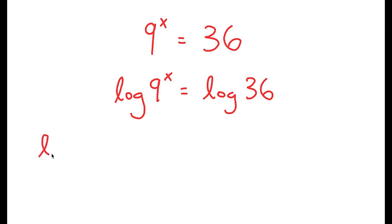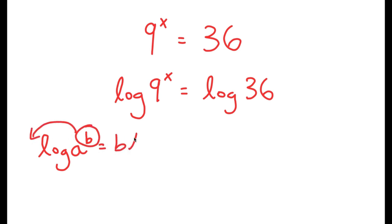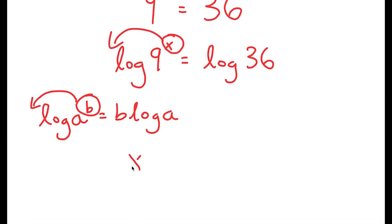Now, if I have something in the form log a to the power of b, I can move this exponent of b to the front, so this turns into b times log a. In this case, I have log 9 to the power of x, and I can move x to the front, so I get x times log 9 is equal to log 36.